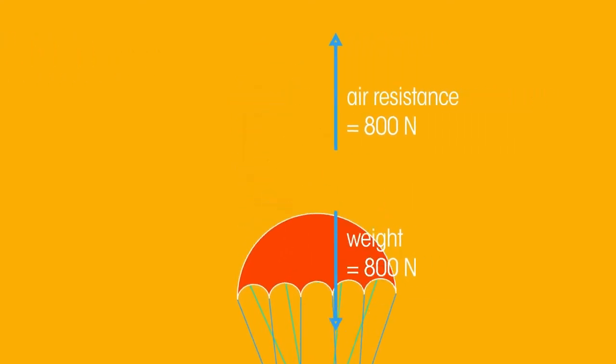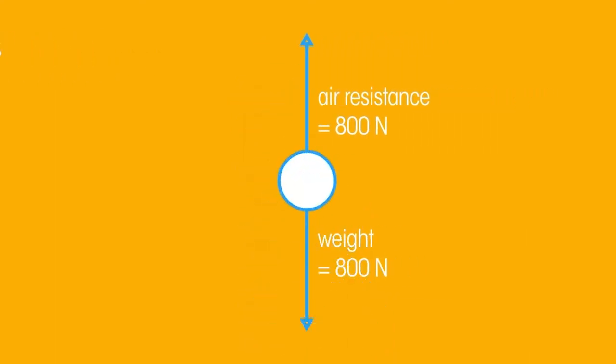What about force diagrams without showing the object involved? These are called free body diagrams. For example, here is a free body diagram of the forces acting on the parachutist. In a free body diagram, the object is shown as a point. The forces are drawn as arrows starting at the point. The length of the arrow indicates the magnitude of the force, and the direction of the arrow shows the direction of the force.